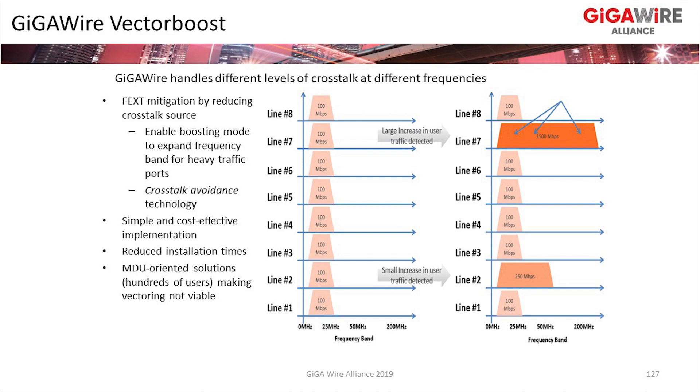In steady state, users are just watching Netflix, surfing the web — they don't need much bandwidth, so they don't need the full 200 MHz frequency spectrum. We'll only allocate them, say, the lower 30 MHz. But if they run a speed test or download a game off Steam, we scale it up and allocate up to 200 MHz on the line, then carve it back down to 100 or 150 MHz when they don't need it. Because bandwidth usage is statistically very bursty, this works extremely well. We get about 80–90% of G.fast 2.12 performance at a fraction of the complexity, power consumption, and cost.